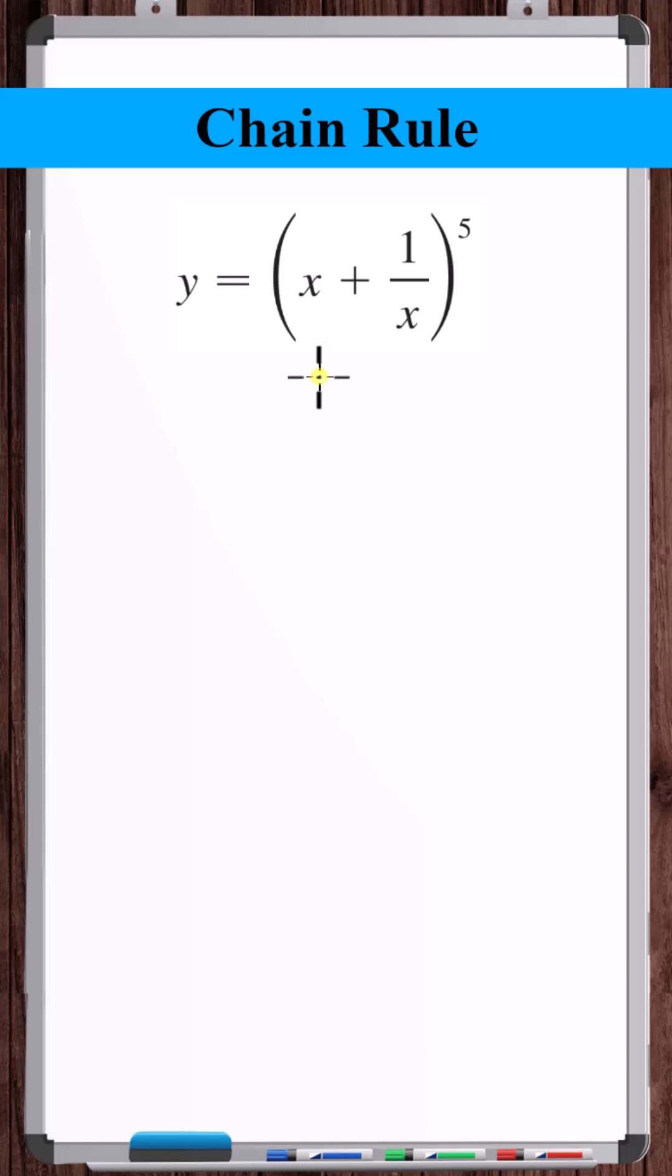So first, let's identify what is the outermost function type here. For this function, this is a little tricky. If you look close, we've got some function of x to the fifth power.